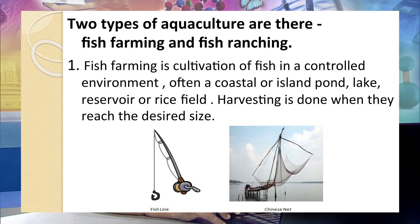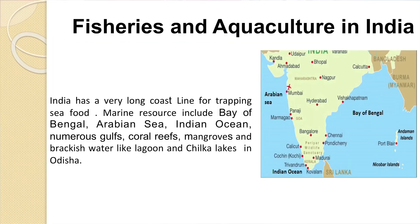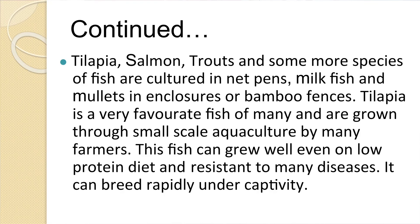Fish ranching is a practice of keeping fish in captivity for a few years in floating cages in coastal lagoons and releasing them into water bodies. When adults come back for spawning or laying eggs, they are caught — examples include hilsa and salmon cultivation. India has a very large coastline for trapping seafood from the Bay of Bengal, Arabian Sea, etc. India's inland water occupies about 1.6 million hectares in the form of river systems, canals, etc. Freshwater cultured fishes are mostly varieties of carps; tilapia, salmon, and trout are cultured in net pens, while milk fish is cultured in enclosures or bamboo fences.